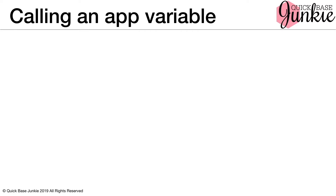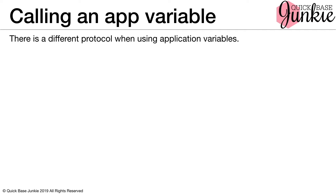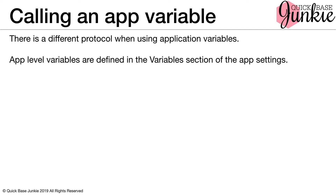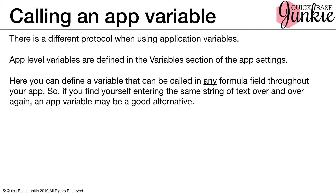Since we're talking about variables, let's talk a little bit about application variables. There's a different protocol when you are using application variables. App-level variables are defined in the variables section of the app settings. There you can define a variable that can be called in any formula field throughout your app. So if you find yourself entering the same string of text over and over again, an app variable may be a good alternative, especially if it might be something you later need to update, in which case you'd only have to update one variable versus multiple formula variables wherever it's used.